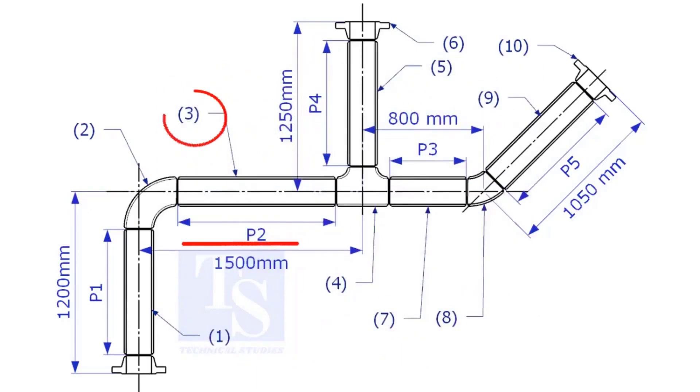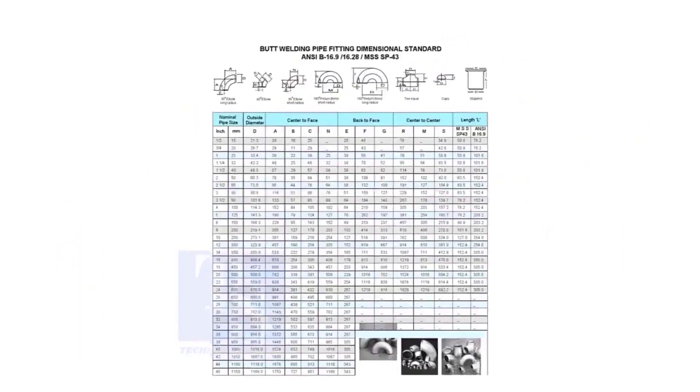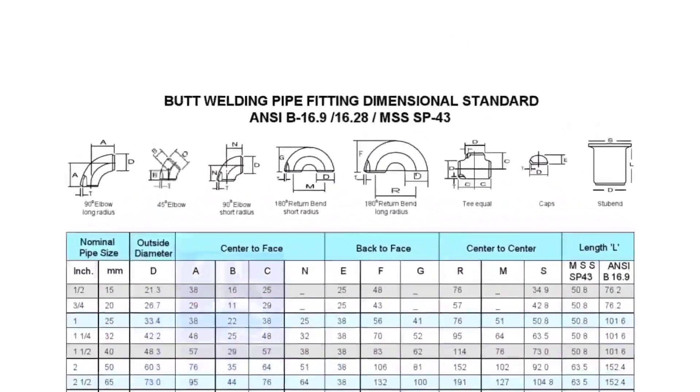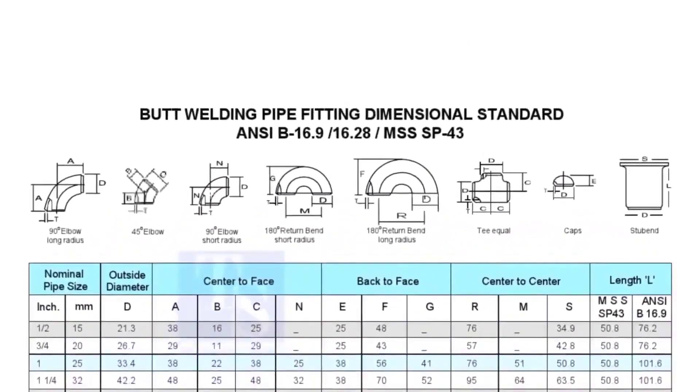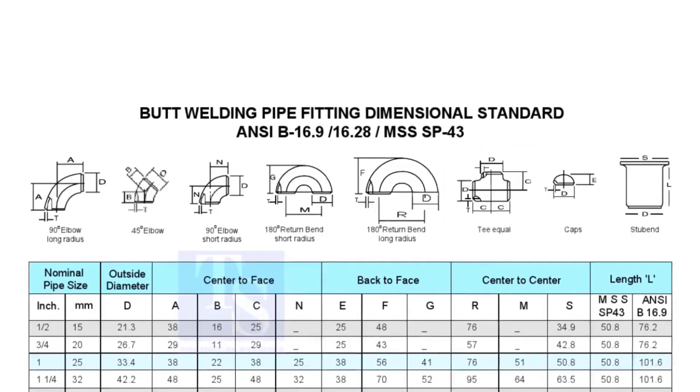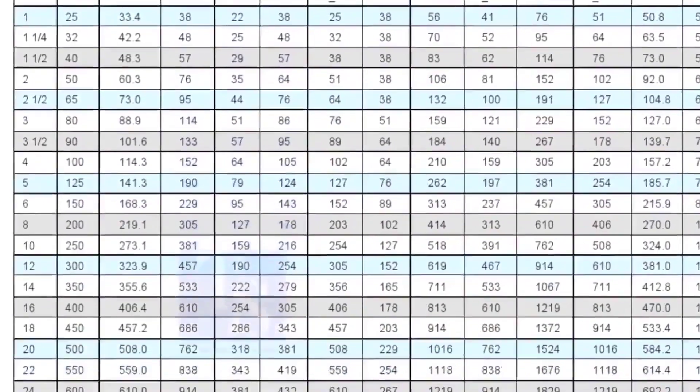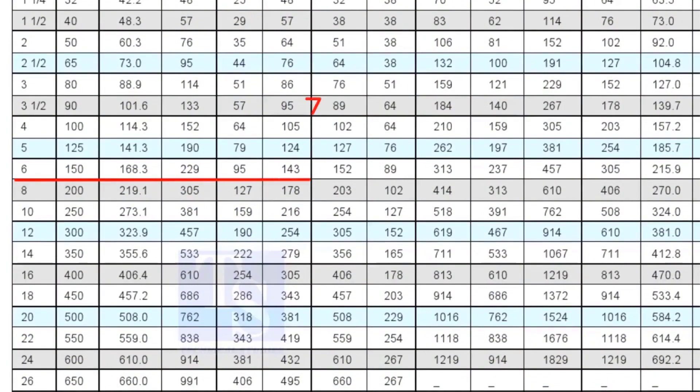Let us calculate the length of item number 3. We already know the takeoff length of the 6 inch long radius elbow. Now, check the chart for the takeoff length of the equal tee. It is 143mm.